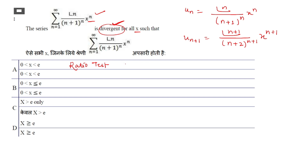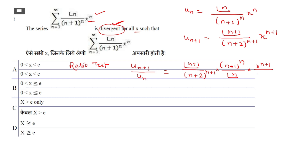In the ratio test, we compute |uₙ₊₁/uₙ| = |(n+1)/(n+2)^(n+1)| · |(n+1)^n / n!| · |x|. Simplifying: the (n+1)! cancels with n!, leaving (n+1). Then (n+1)^n remains in numerator and (n+2)^(n+1) in denominator, giving us (n+1)^(n+1)/(n+2)^(n+1) · |x|.